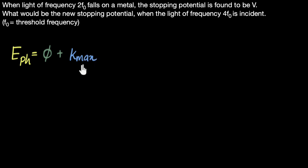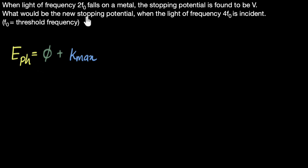Let's go back to the equation and see what we are asked. We are given the frequency of the light that is falling — it's given to be two times the threshold frequency. For that light, we are given the stopping voltage. And we are asked what would happen to the stopping voltage when four times the threshold frequency light is shone on it. Since frequency and stopping voltages are given, we need to convert this equation into frequencies and stopping voltage.